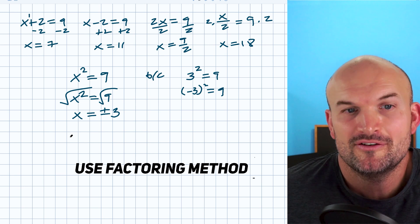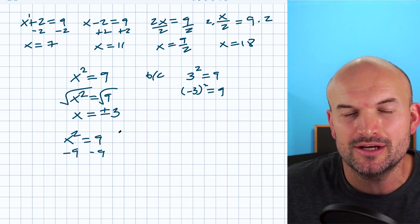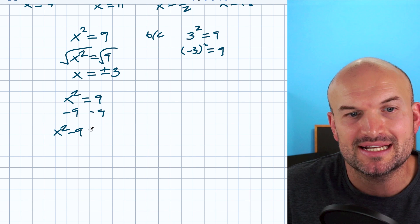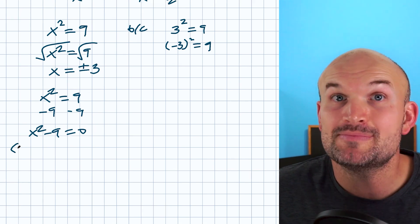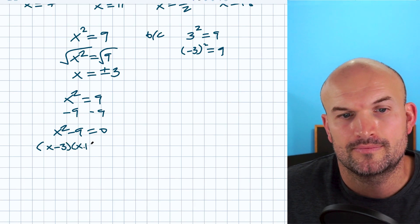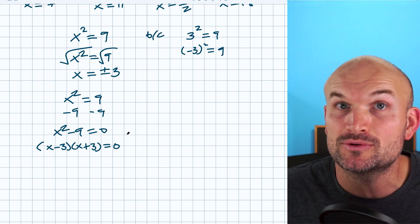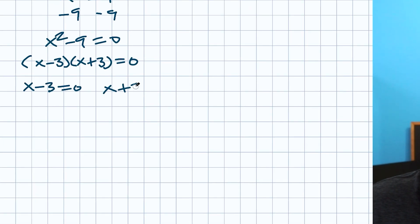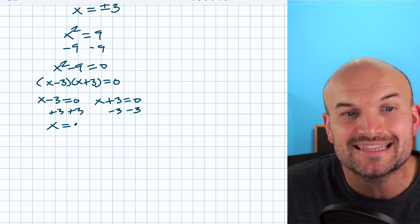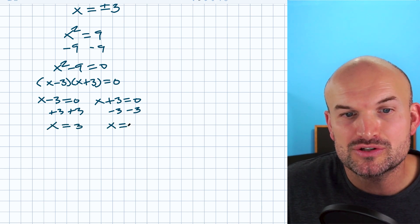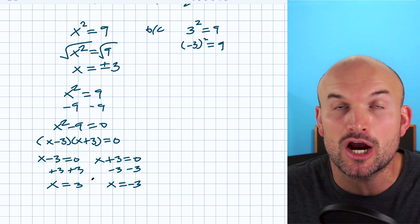There is another way we could solve this, which would be by factoring. If I take x squared equals nine and solve by factoring, I want to set that equal to zero — subtract a nine on both sides, giving x squared minus nine equals zero. I recognize this is a difference of two squares, so I can factor it into (x minus 3)(x plus 3). Now that we have the product equal to zero, we apply the zero product property and set each factor equal to zero, then use inverse operations to solve: x equals three, x equals negative three — two solutions, just like with the plus or minus approach.